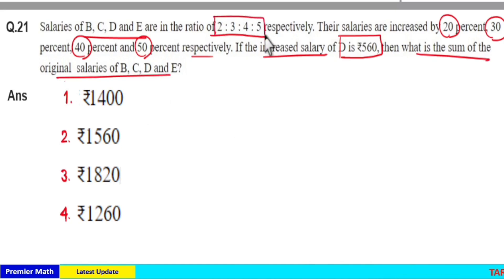Here sum of ratios is equal to 5 plus 4 plus 3 plus 2 is 14. So answer is multiple of 14. Here B, C, D and E are in the ratio 2:3:4:5. Take it as 200:300:400:500.